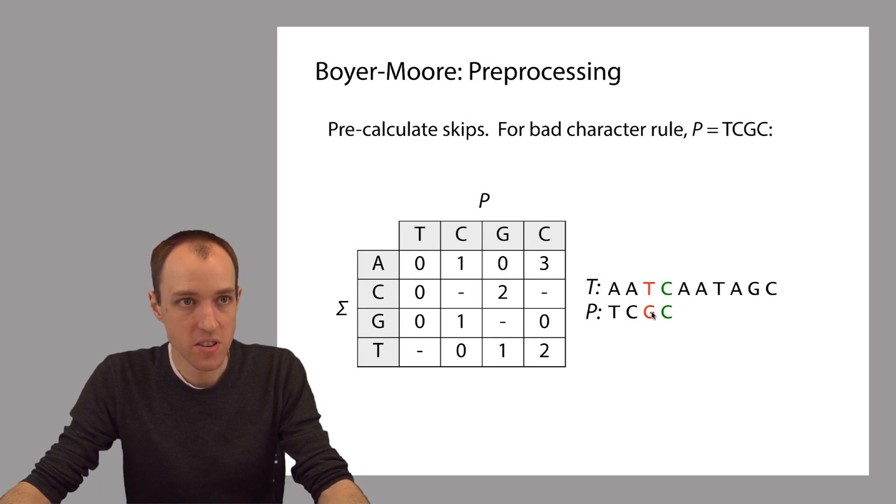So this offset 2 in the pattern P corresponds to this column of the matrix. And this mismatched character from the text T corresponds to this row of the matrix. So we're going to look in this column and this row.